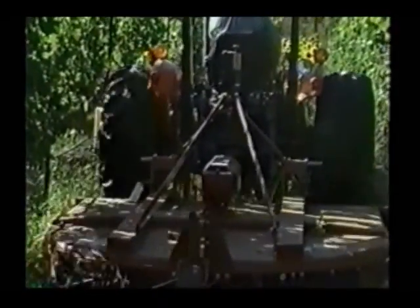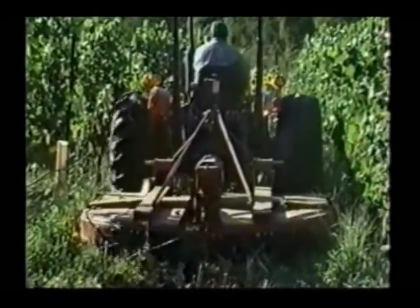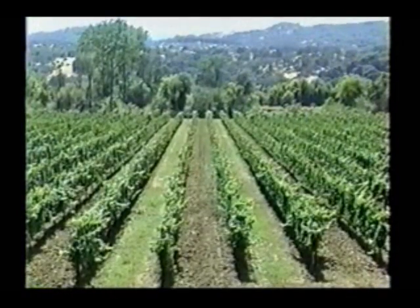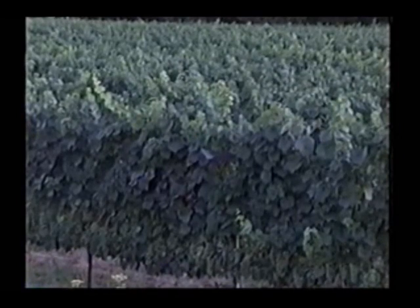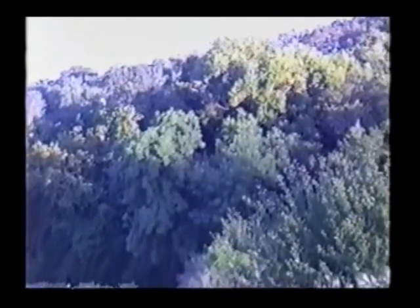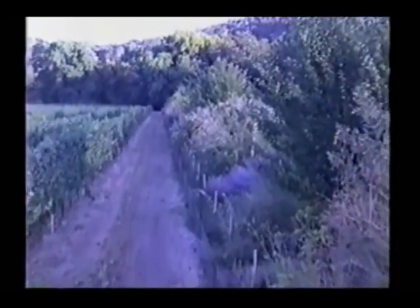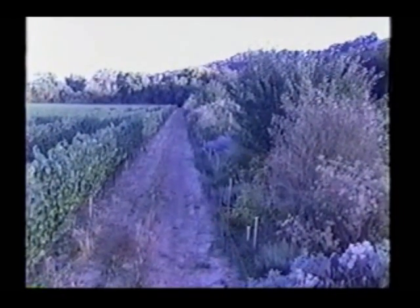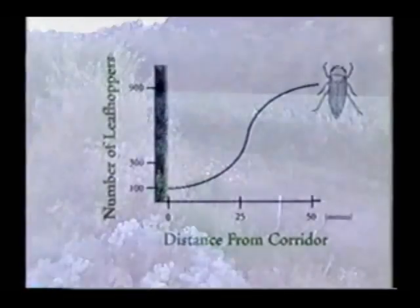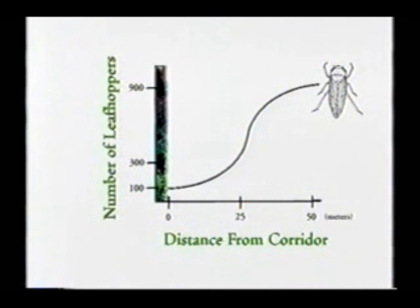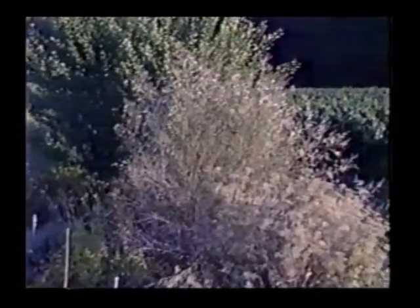Cover crops are just one way to bring biological diversity into the fields. Another innovative approach takes advantage of nearby wild vegetation. The forests surrounding the vineyards in Northern California are also important sources of beneficial insects to control grape pests. But in large fields, their effect is limited to the edge of the field. In this vineyard, a long strip of vegetation containing over 60 species of flowering plants functions as a biological corridor along which beneficial insects can move out of the forest and into the center of the vineyard. A recent study demonstrated how this corridor amplified the area of biological control. Since this beneficial effect declined beyond 25 meters from the corridor, the next step would be to establish additional corridors of flowering plants 50 or so meters apart.